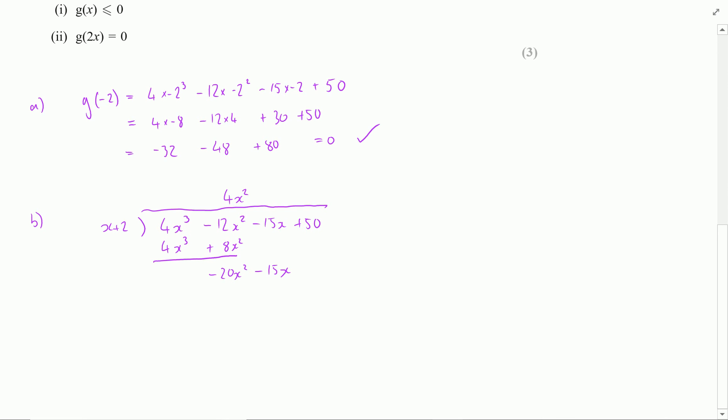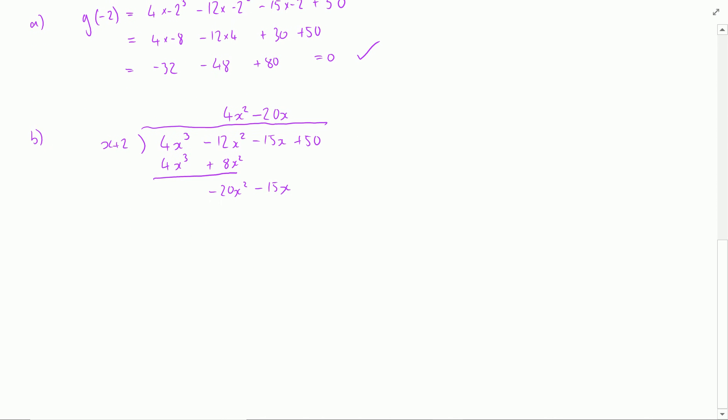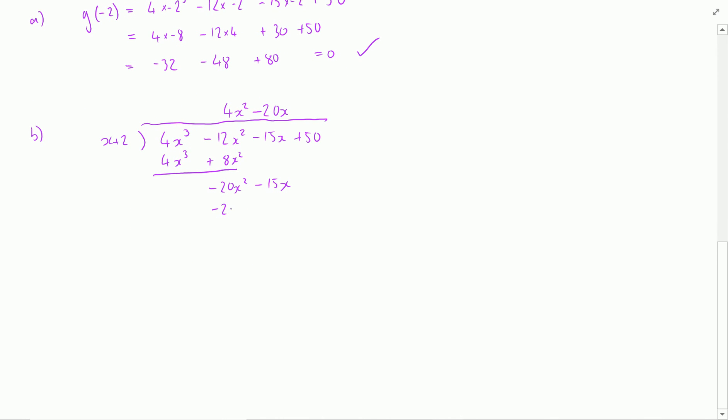Drop down the next term and x is into negative 20x squared goes negative 20x times. So multiplying that through is going to give me minus 20x squared and minus 40x.